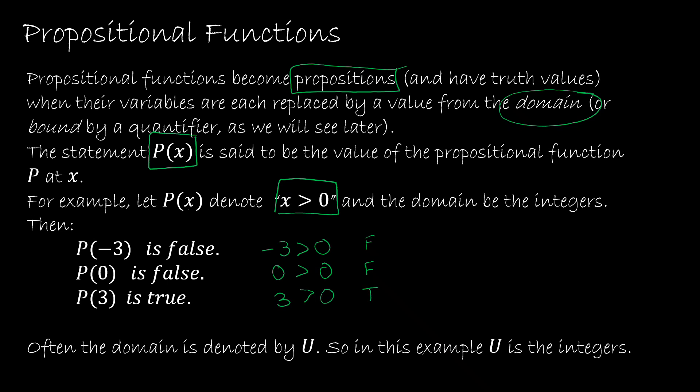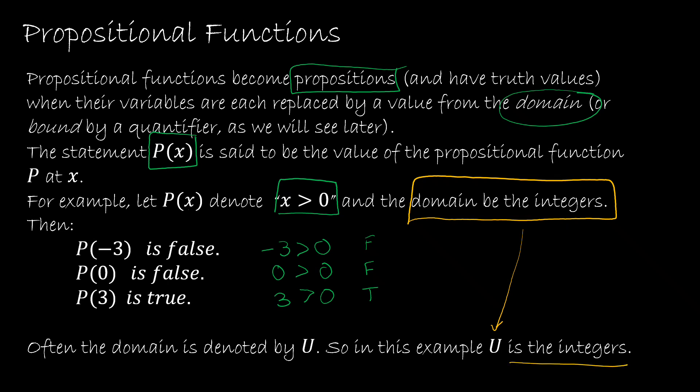It's very important that we understand what the domain is. The domain is called the universe, which is why we use u — we're talking about the universe of, in this case, integers. So we have a propositional function that becomes a proposition when we replace the variable with some value from the domain.